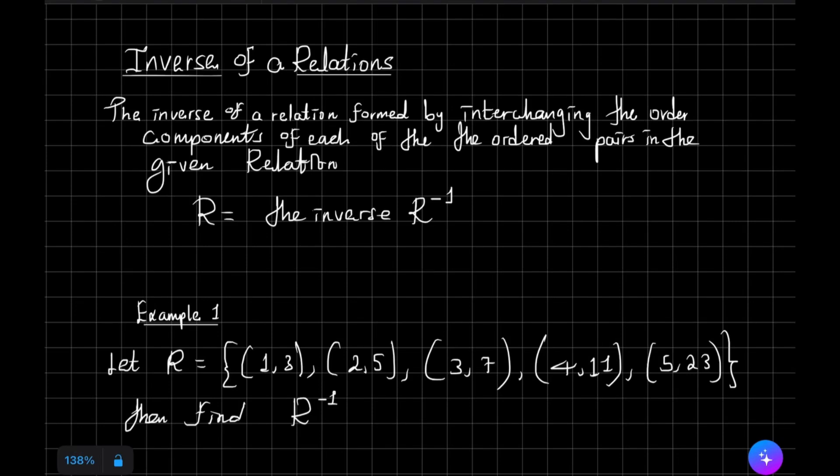The inverse of a relation is formed by interchanging the ordered components of each of the ordered pairs in the given relation. The inverse of a relation is interchanged — the relation's domain and range are interchanged.